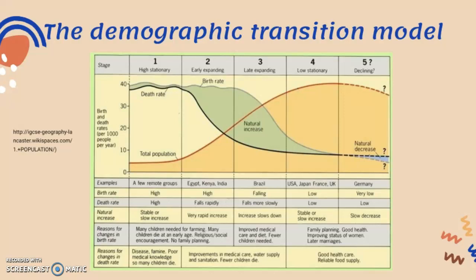In stage two, healthcare begins to improve and sanitation arises, so death rates begin to fall, but birth rates still remain high. The population starts to increase at a much more rapid rate because death rates are low while birth rates are high.